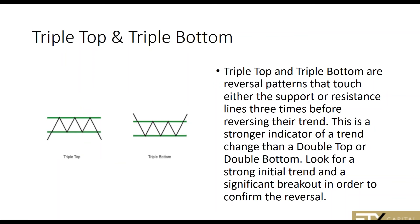Triple tops and triple bottoms are something more important. A triple top and triple bottom is developed when price trades in a channel — hitting the resistance line, bouncing off, coming down to the support line, going back to resistance, and repeating — three times before breaking out. Three times is about the best percentage-wise for when price should break out of that channel after making three hardcore bounces. A triple top and triple bottom are reversal patterns that touch either the support or resistance line three times before reversing their trend — a stronger indicator than a double top or double bottom.